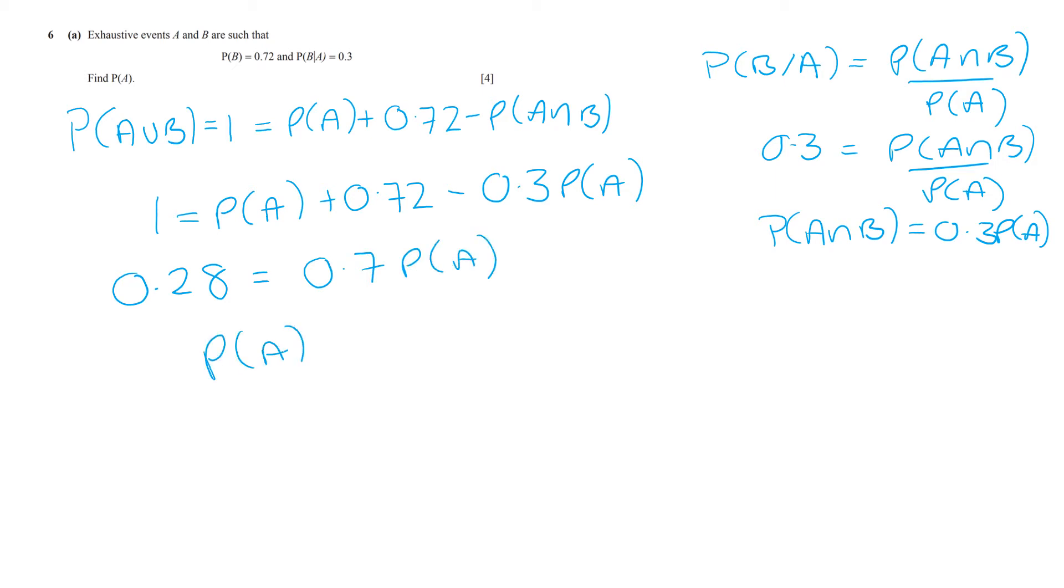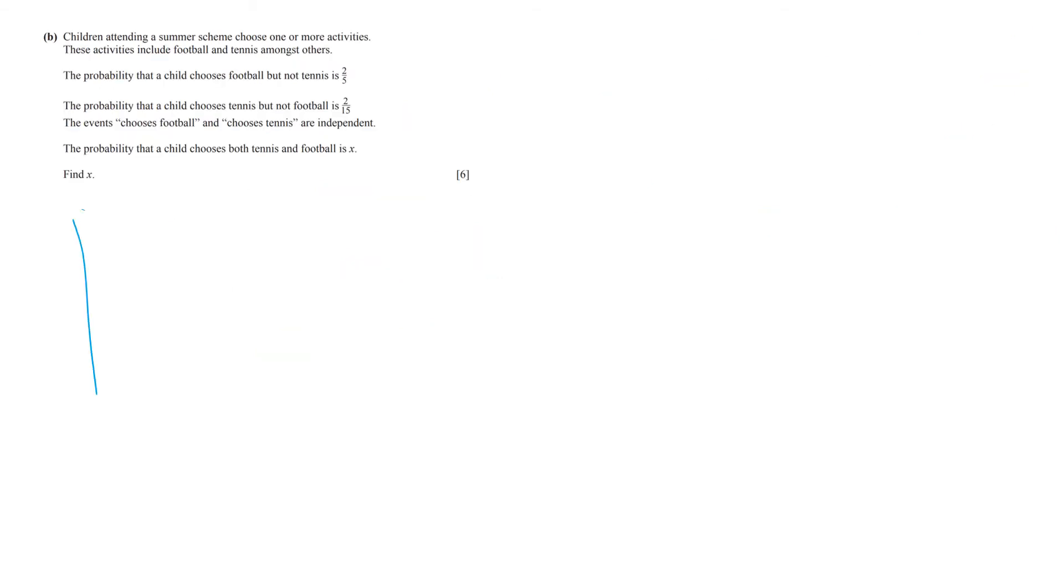And that means that the probability of A must be 0.4. I'm going to use a Venn diagram to organise my information. 2 fifths, football but not tennis, 2 fifteenths, tennis but not football, and X that they do both.